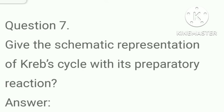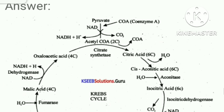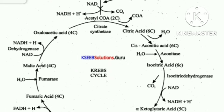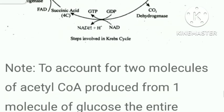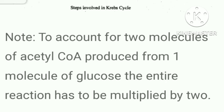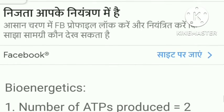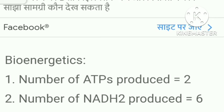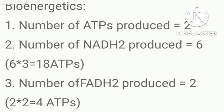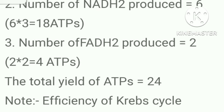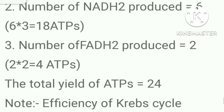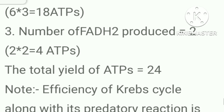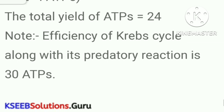Give the schematic representation of Krebs cycle with its preparatory reaction. To account for two molecules of acetyl-CoA produced from one molecule of glucose, the entire reaction has to be multiplied by two. Bioenergetics: number of ATPs produced = 2; number of NADH₂ produced = 6 (6 × 3 = 18 ATPs); number of FADH₂ produced = 2 (2 × 2 = 4 ATPs); total yield of ATPs = 24. Efficiency of Krebs cycle along with its preparatory reaction = 30 ATPs.